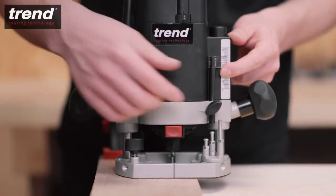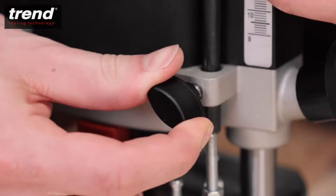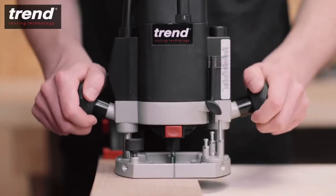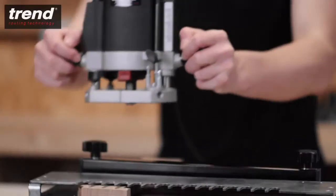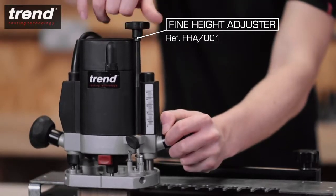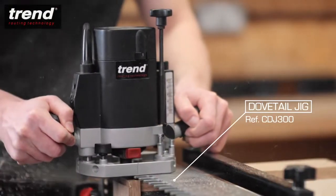Raise the depth stop to set the required cut depth. The depth stop can be used with the rotating turret to preset three different cut depths. A fine height adjuster is available to precisely set cut depths when used with jigs or router tables.